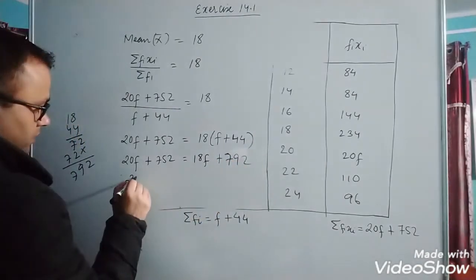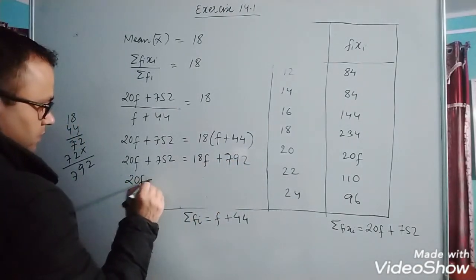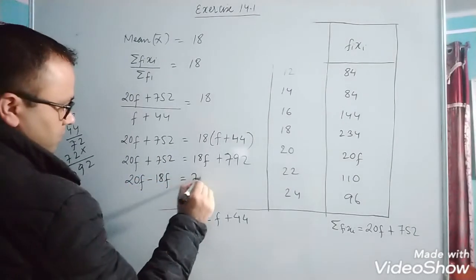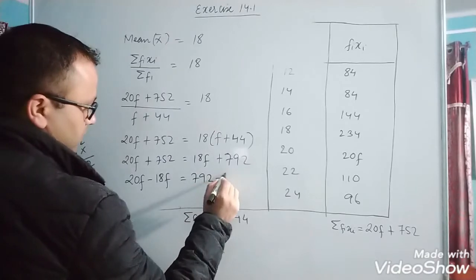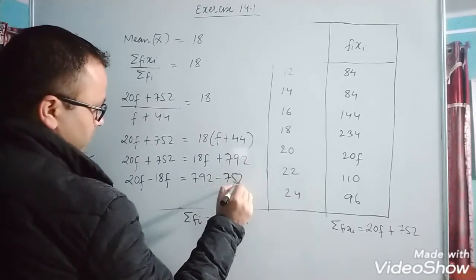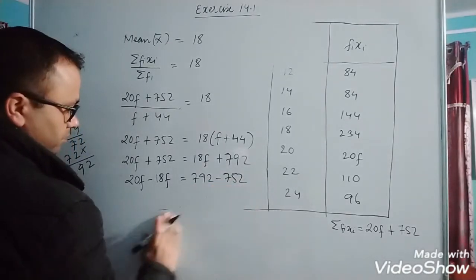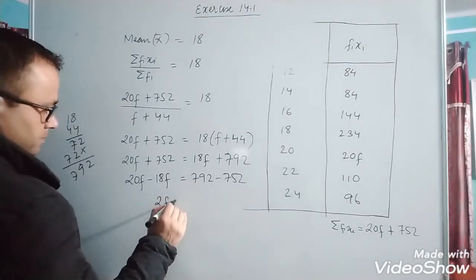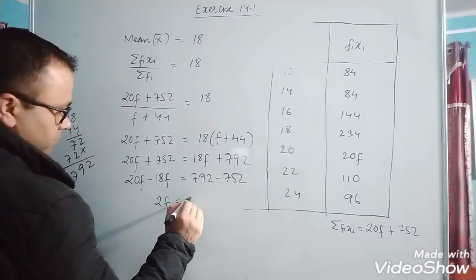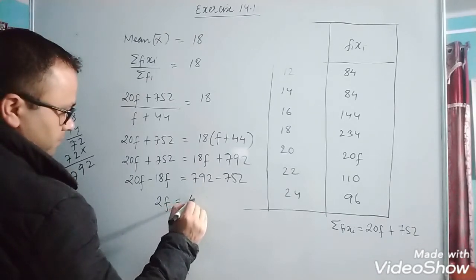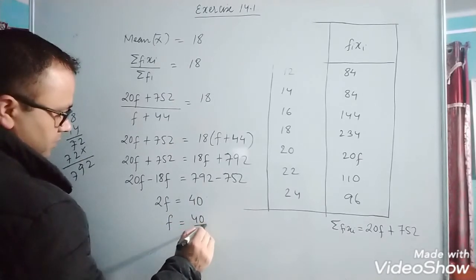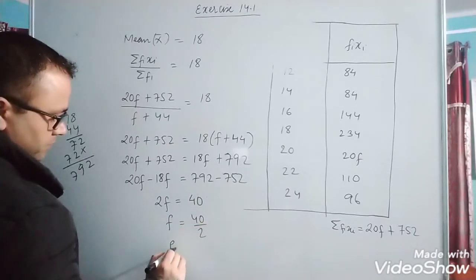Take f on one side: 20f minus 18f equals 792 minus 752. 20f minus 18f is 2f. This equals 40. f equals 40 divided by 2. f equals 20.